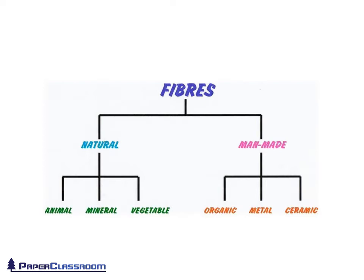Fibres can be divided into two major groups: natural fibres and man-made fibres. The group of man-made fibres can be subdivided into three groups: organic, metallic, and ceramic. Ceramic fibres could be carbon fibre, glass fibre, or glass fibres used in loft insulation. Metal fibres are wires, and organic fibres are the type of material that clothing is made out of — so terrylene, nylon, rayon, that type of material.